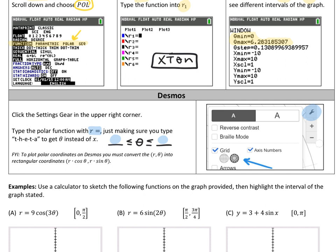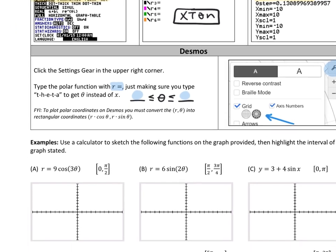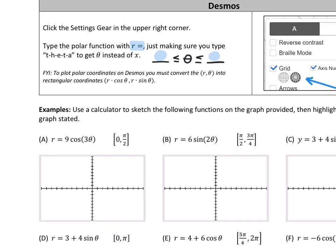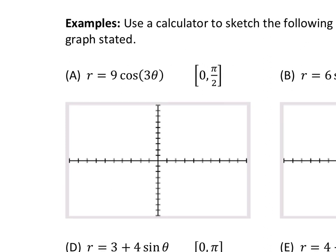Okay, so leave Desmos alone for a second. Let's go to our calculators. We're just going to sketch the functions on the graph provided. Sketch is not accurate. We're not plotting individual points. We're just sketching the shape. And we're going to highlight the interval of the graph stated. So I'm stuck back here because I'm going to show you on my calculator. That's why I'm not standing in front. So I'm in polar mode. I know I'm in polar mode because it says r equals, and I'm just going to type that function in. Nine times the cosine of three theta. Remember, the X button becomes theta when you're in polar mode. I need to check to make sure my window is normal because I forgot. Okay.